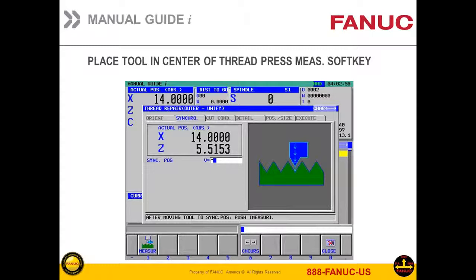You press the orient soft key, and then you take the hand wheel and move your threading tool over to where the thread is on the part, bringing it down so the point of the threading insert is right in the middle of the thread. This is as good as whatever your eyes are, so be very careful and center it up as closely as possible. I always take a business card and hold it underneath the thread for a white contrast so you can see it better — an old engine lathe operator's trick. Then press the measure soft key and it puts a value into the field called sync position, lining up the Z axis with the C axis of the spindle.